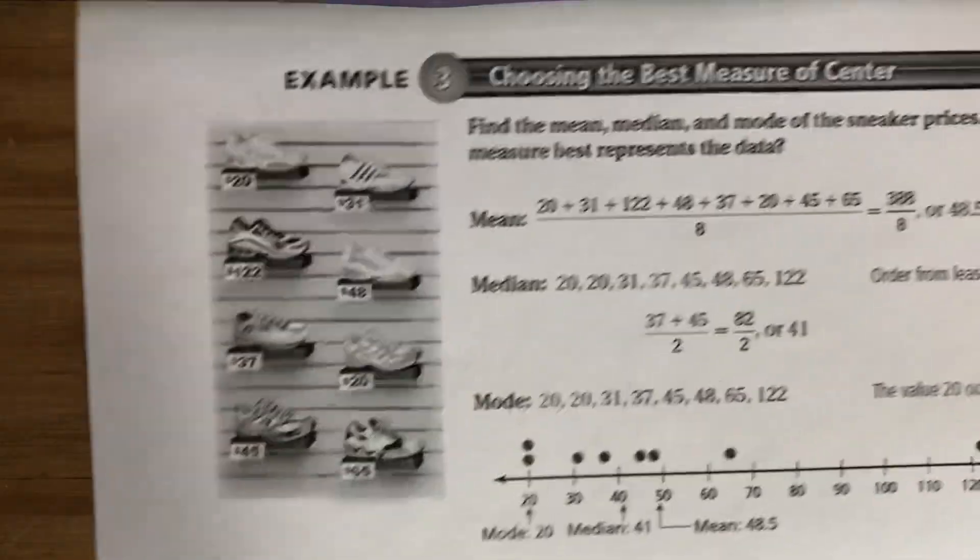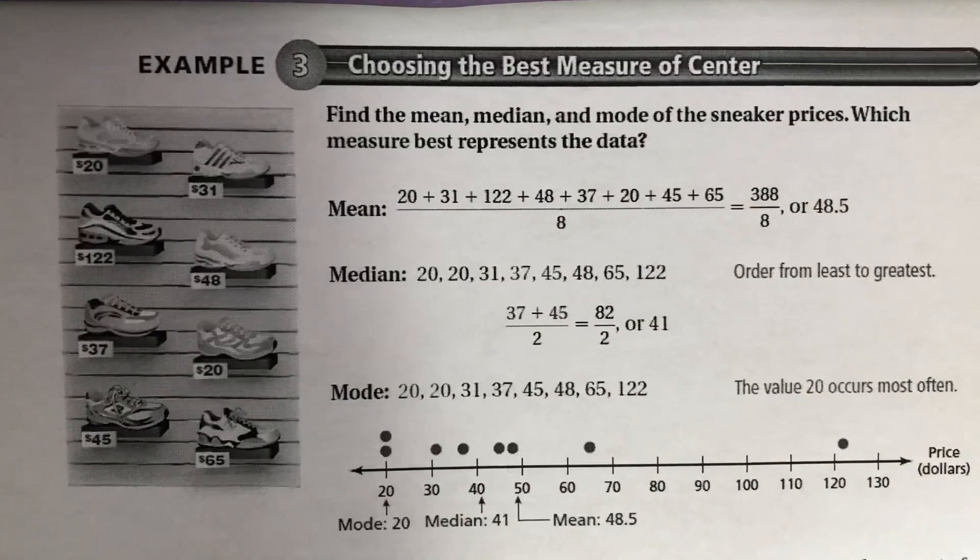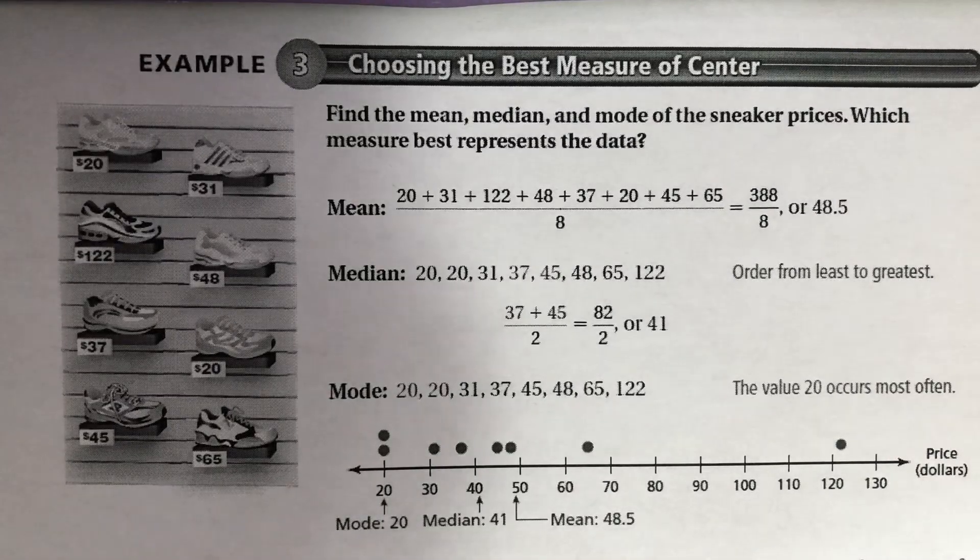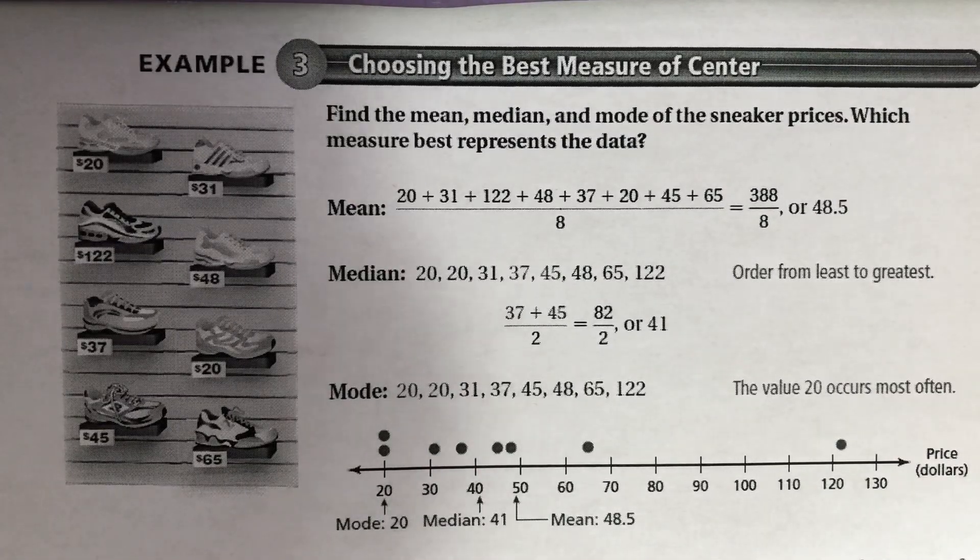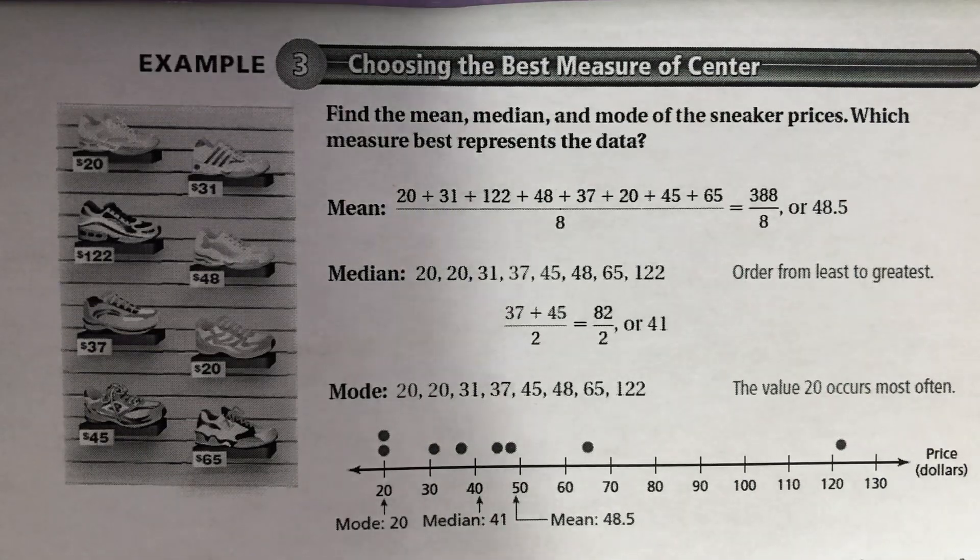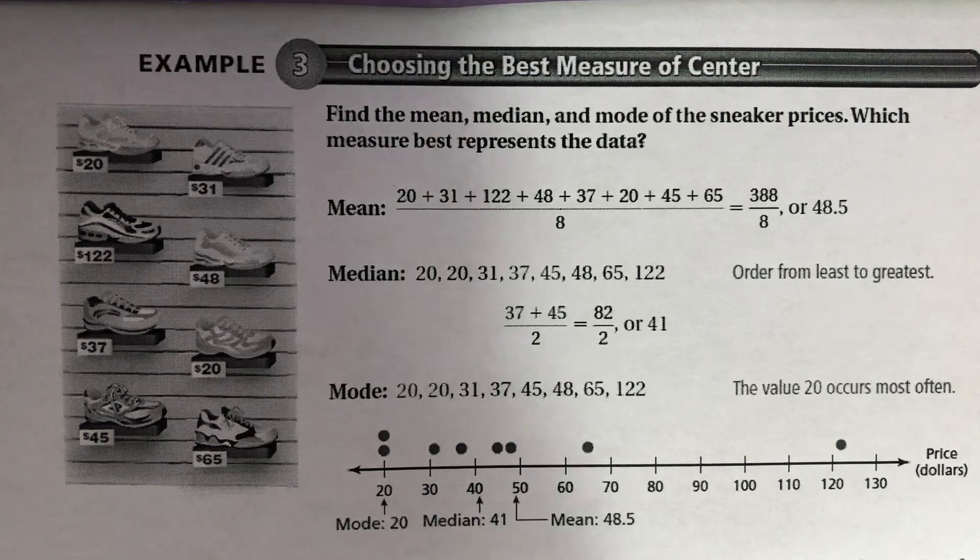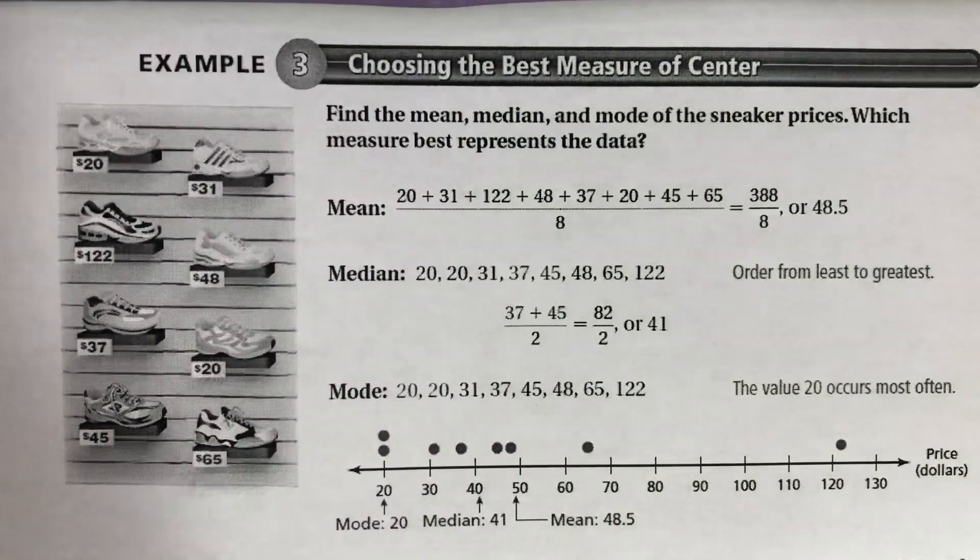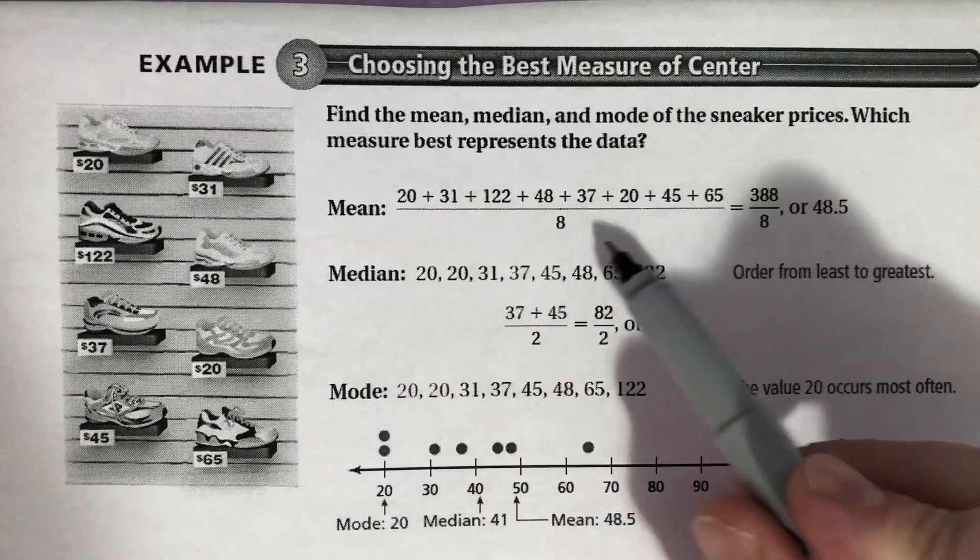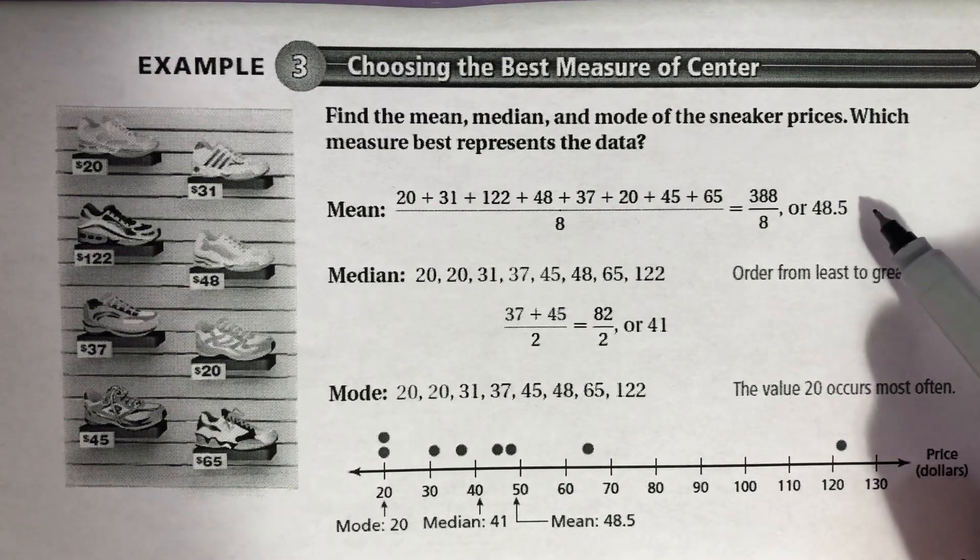So we use this example from the textbook. And you'll find this exact example in the textbook in color. And it's showing a student at a shoe store looking at the prices of some different athletic shoes. And they asked you to find the mean, the median, and the mode of those prices. And then they want to know which measure best represents the data. So you can see that they've done each of the different examples.